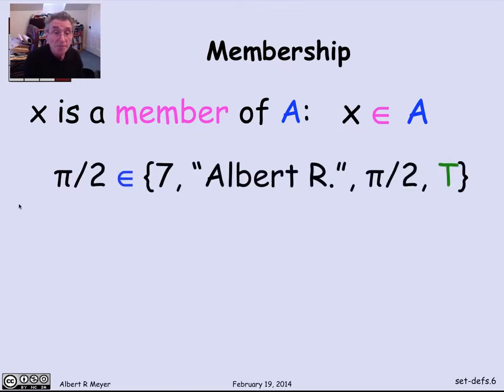So for example, pi over 2 is a member of that set that we saw before that had pi over 2 in it. 14 over 2 is also a member of that set, because 14 over 2 is just another description of 7. When I write 7 here, I don't mean the character 7. I mean the number 7. And so 14 over 2 is the description of the same number. It's in that set.